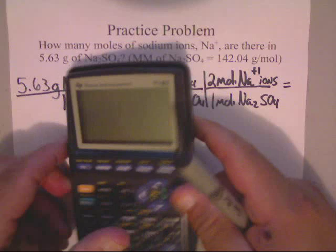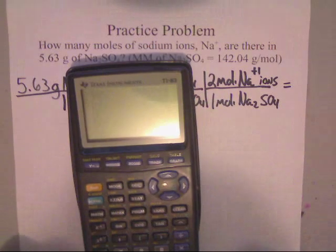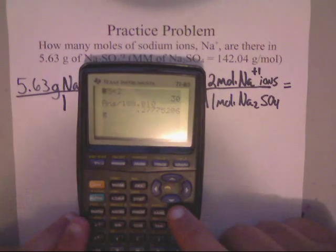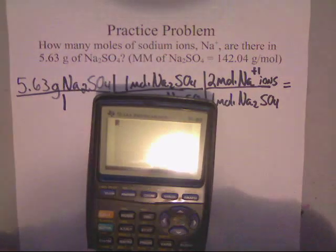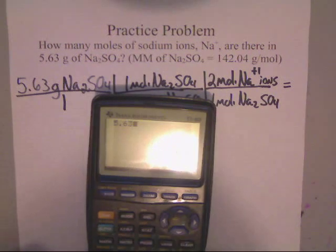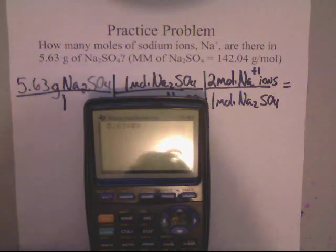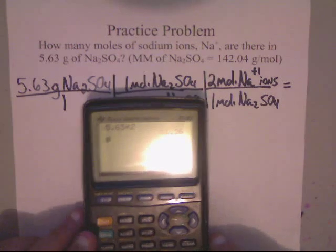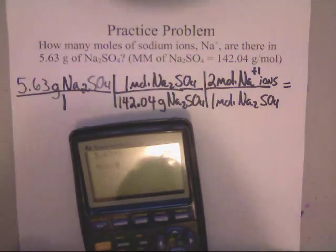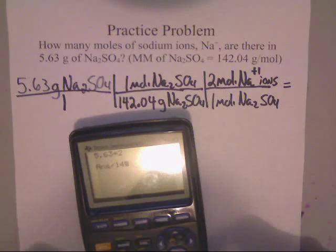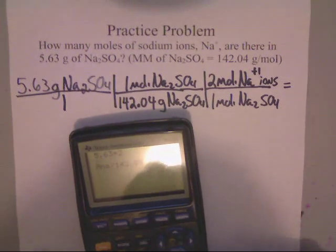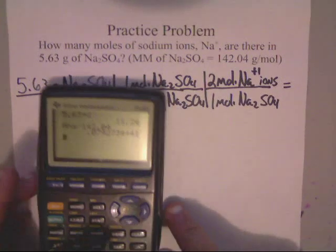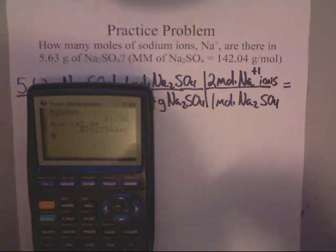Anyway, we need to put this in on a calculator. So let's turn the calculator on. There it is. Let's clear it out. Now, let's punch it in. We've got 5.63 times 2, is that number, divided by 142.04. And that gives us this number. I'll write it down for us to see.